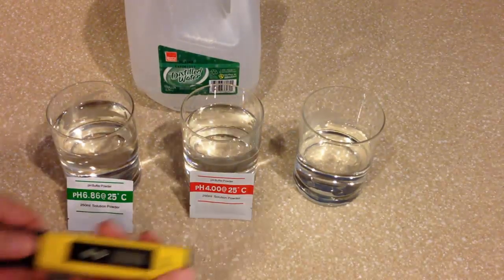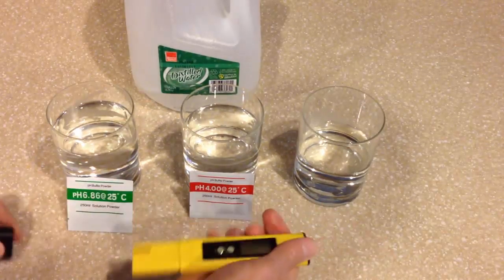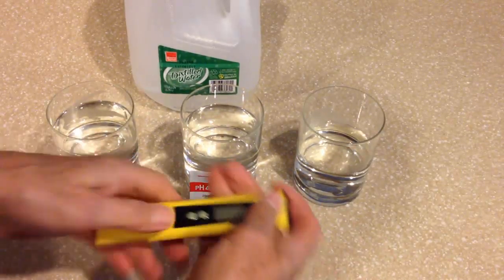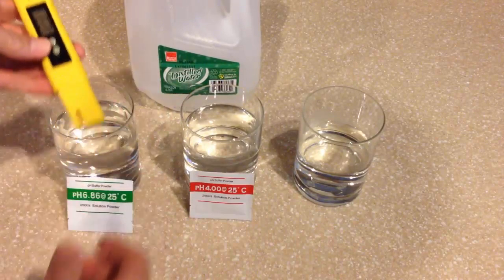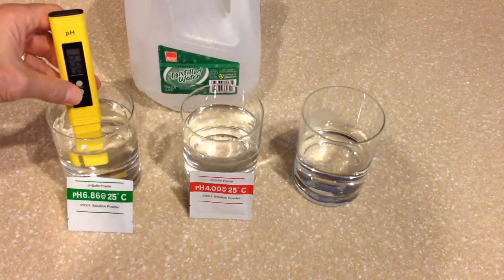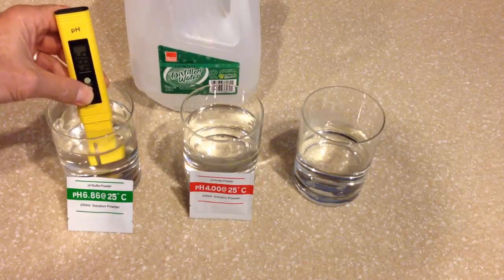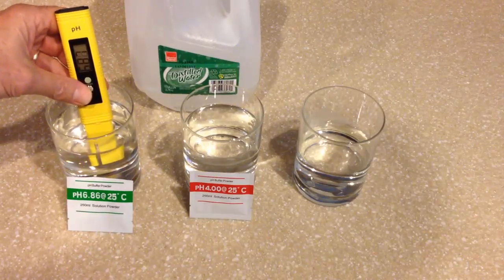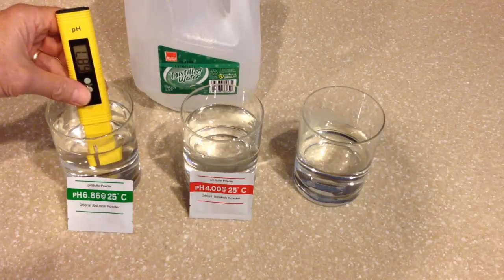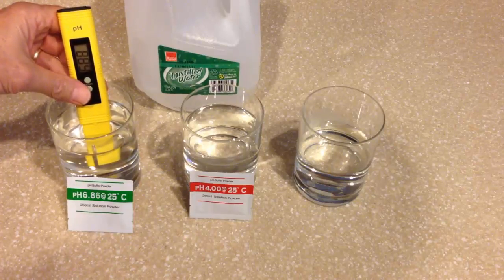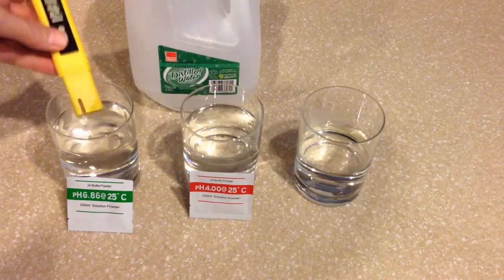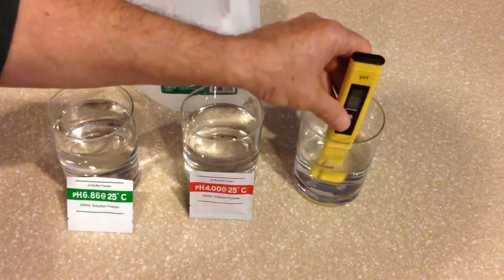So, let's demonstrate how easily this happens. We're simply going to remove the protective cap, turn it on, insert the probe into the 6.86 solution, press the calibration button, hold it for three seconds, and allow it to start to flash. It'll flash at 6.86, and once it stops flashing, there it is, it's stopped at 6.87, which is absolutely fine.